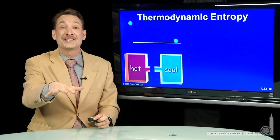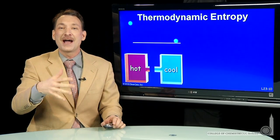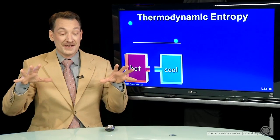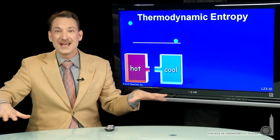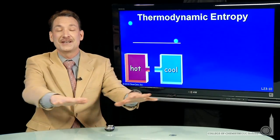The natural direction of processes in the universe is determined by entropy changes. The natural direction is to increase the entropy of the universe, that is, to disperse energy over as many microstates as possible.